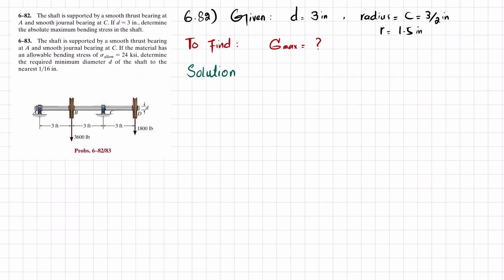The first step is to find the reaction forces. If we remove the thrust bearing and smooth bearing, there will be a reaction force at point A, which we call Ra, and a reaction force at point C, which we call Rc. We will use equations of equilibrium to find these unknown reaction forces.